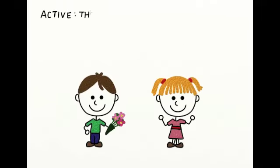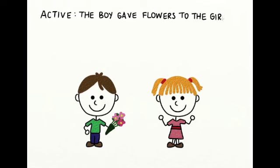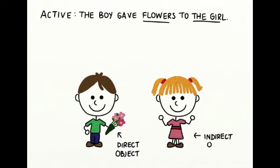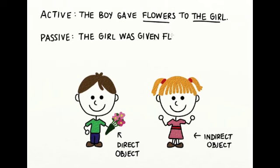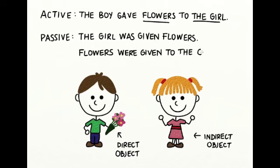Sometimes a sentence can have more than one object. For example, the boy gave flowers to the girl. In this sentence, flowers are the direct object and the girl is the indirect object. We can write this sentence in passive voice in two ways. The first way: the girl was given flowers. The second way: flowers were given to the girl. Remember, if you use the indirect object first, we must include the preposition to.